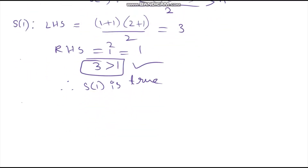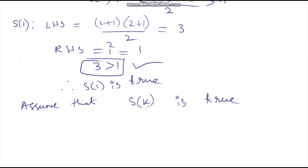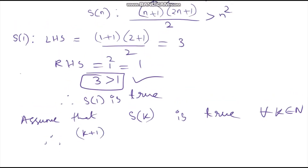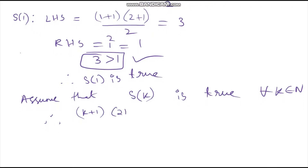Now in step 2, assume that S of k is true for all k belonging to the natural numbers. Therefore, (k plus 1) into (2k plus 1) by 2 is more than k squared.